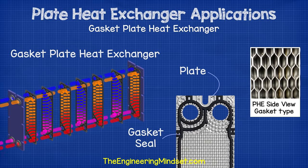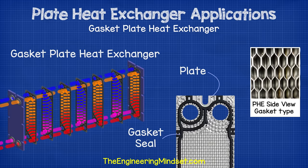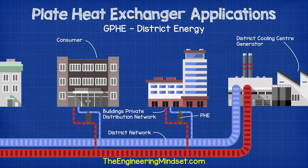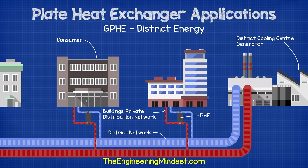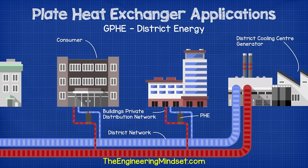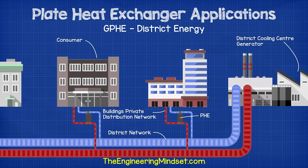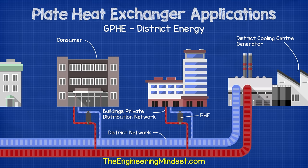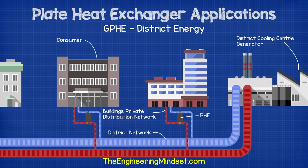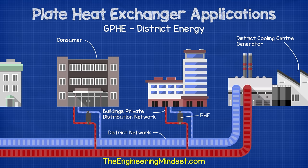Applications of gasket plate heat exchangers — you'll find these in many heavy-duty HVAC as well as industrial and process engineering applications. For district heating and cooling, these heat exchangers are used to connect buildings to district heating and cooling networks. The district center distributes hot and cold fluids around central pipes, and buildings connect to these networks via gasket plate heat exchangers installed between the building's central plant circuit and the district network, usually through a heat meter to measure consumption.